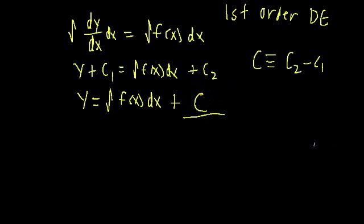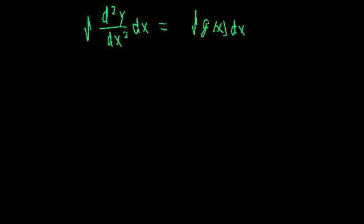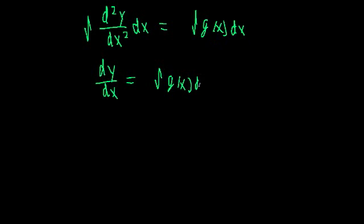Now let's take a look at our second example: a very basic second-order differential equation. We're going to say that the second derivative of y with respect to x is equal to g of x, where g of x is just a general function. In order to solve this, we're going to have to integrate twice to find y as a function of x. Let's integrate the first time — the integral of the second derivative of y is just dy/dx, and that equals the integral of g of x dx, but we have to include the constant of integration, plus c.